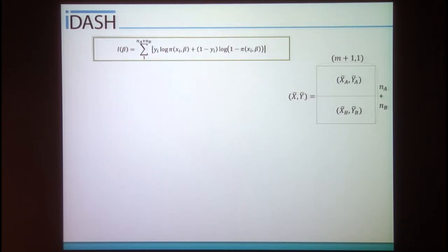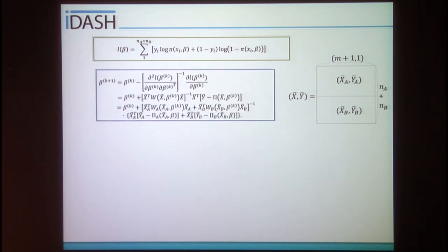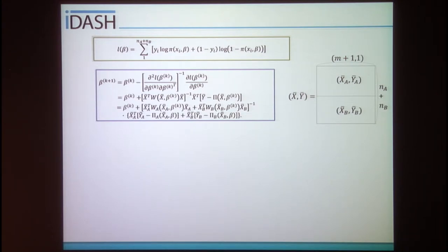Our contribution is identifying a way to decompose the Newton-Raphson algorithm into linear components. For example, assuming data are horizontally partitioned from two institutions A and B, we can decompose the log-likelihood function into components matching only single institutions. We do not need to exchange record-level information — only aggregated information from each individual institution.